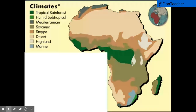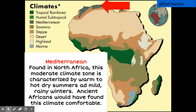The Mediterranean climate is located along the Mediterranean Sea. Found in North Africa, this moderate climate zone is characterized by warm to hot, dry summers and mild rainy winters. Ancient Africans would have found this climate comfortable.